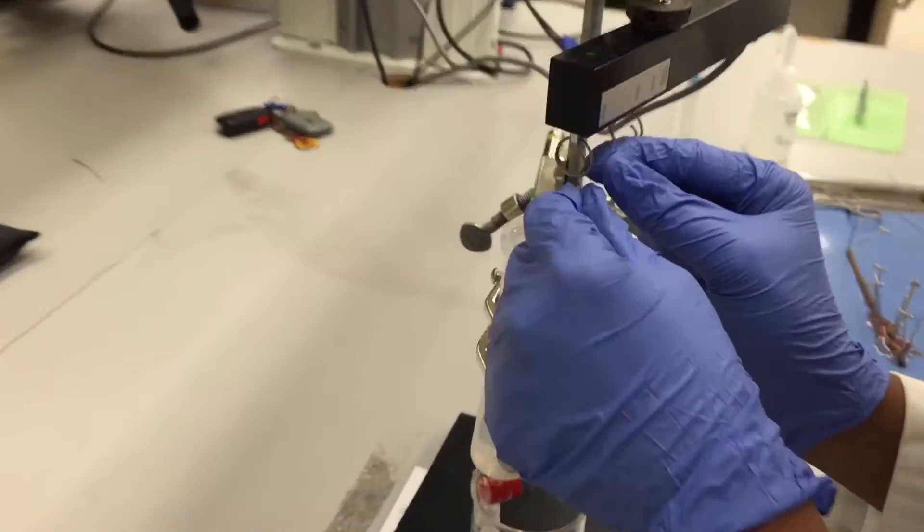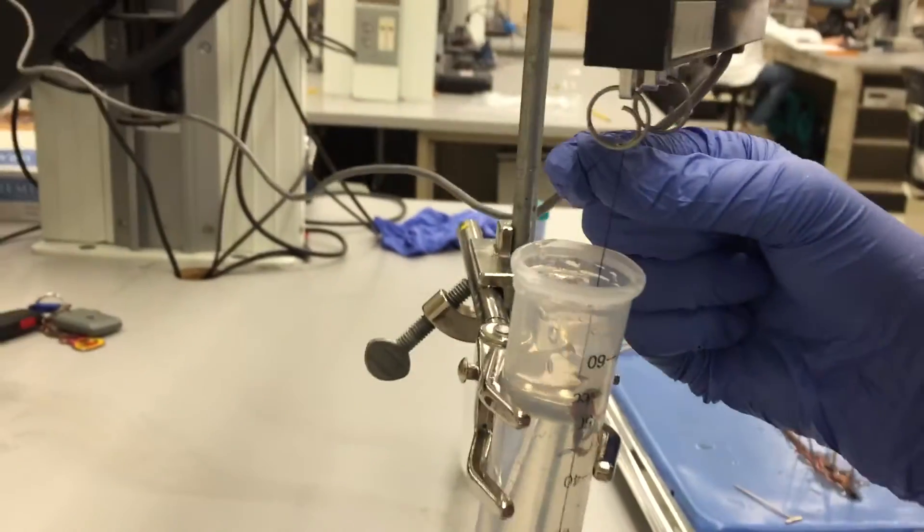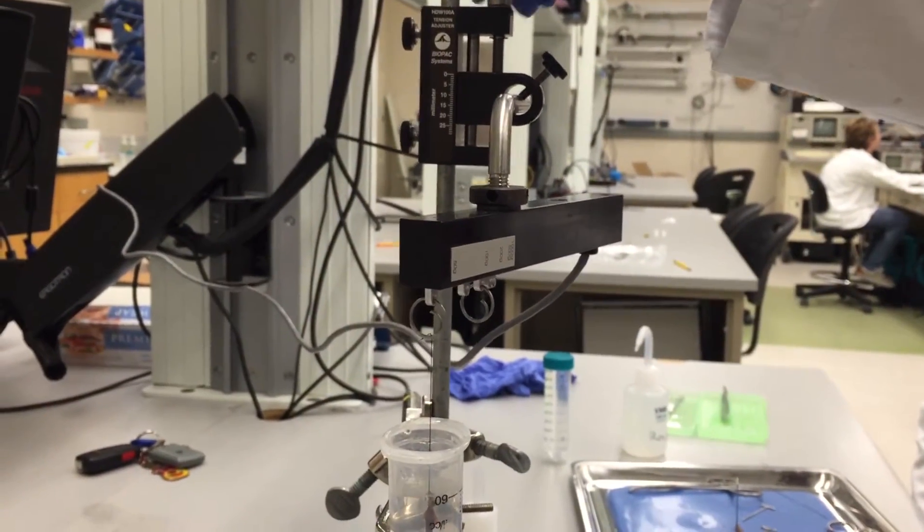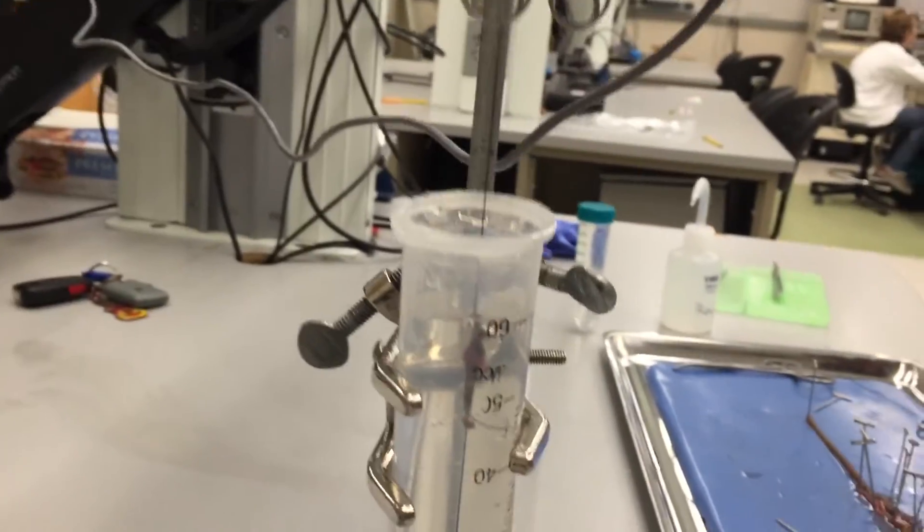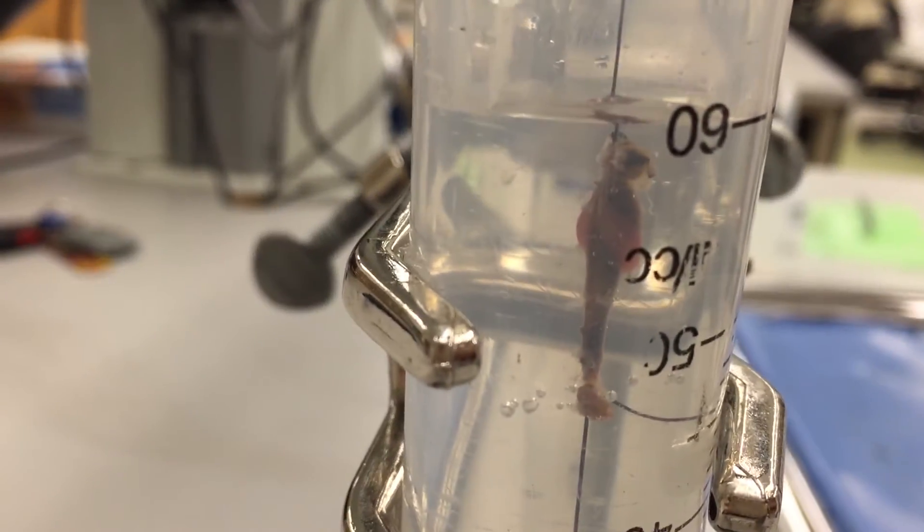Now you can attach the suturing string at the other end of the crop and gizzard to the force transducer. Using the tension adjuster, you can ensure that the crop and gizzard are under enough tension so that you can observe the contractions, but not under too much tension as to destroy the tissue.